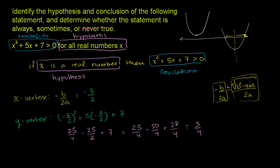The vertex y-value is 3 fourths, and the x-value is negative 5 halves, so the parabola sits above the x-axis. Because the minimum point of this upward-opening parabola is a positive number, the function is always at that level or above. Therefore, if x is a real number, it is always true that x squared plus 5x plus 7 is greater than 0.